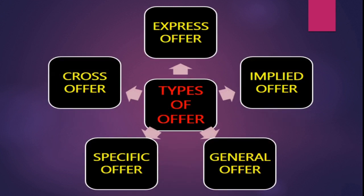The fifth type is cross offer. For example, Mr. X writes to Mr. Y saying 'Can you purchase one thousand mobile phones for rupees one crore?' On the same day, at the same time, unknowingly Mr. Y also writes the same statement to Mr. X. When two people make identical offers simultaneously, both become proposers or offerers. Since in a contract only one person can be the proposer and the other the proposee, both offers get declined.